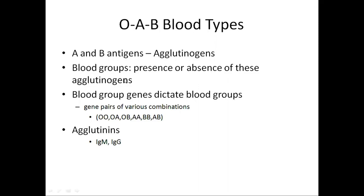Antigens are also called agglutinogen, while antibodies are called agglutinins. If the patient has blood group A, then the A antigen must be present in his blood, while the corresponding anti-A antibody must be absent in his plasma. A patient having blood group B should contain the B antigen in his blood.